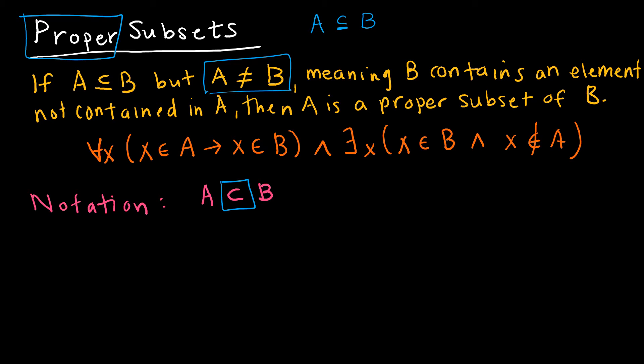Therefore, we have some element in B that's not contained in A. So let's say A was that set of 1, 2, 3. If B was the set of 1, 2, 3, I could say A is a subset of B, and B is a subset of A, and therefore A and B are equal sets.